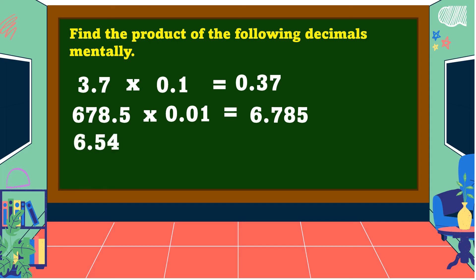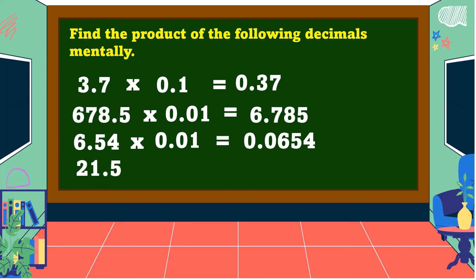Another example: six and fifty-four-hundredths times one-hundredth. The answer is equal to six-hundred-fifty-four ten-thousandths.